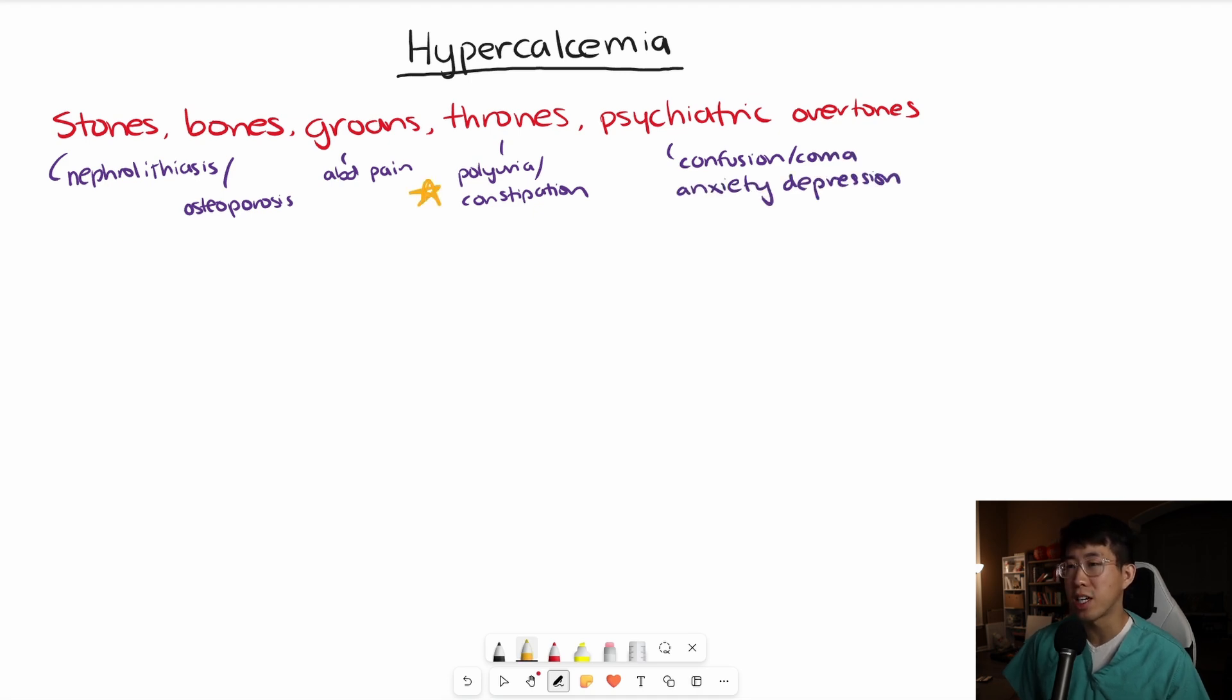If you ever see the combination of polyuria plus constipation together, that is highly specific for hypercalcemia. In general, these symptoms don't appear until the patient's calcium level is greater than 12 mg per deciliter. Usually patients below that level are going to be asymptomatic.